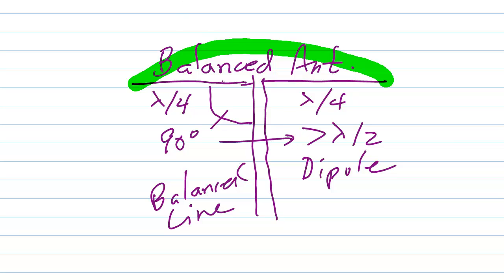Well, you can bend these elements down. If you bend them down to the same extent, so that this angle here and this angle here are the same, then you have an antenna known as an inverted V.